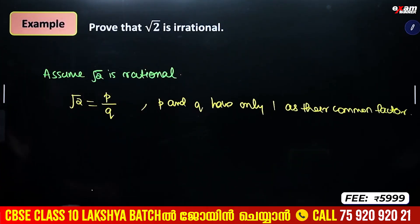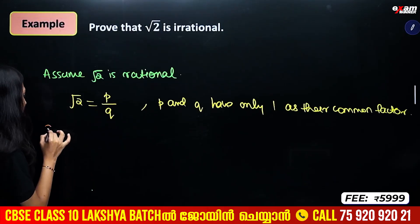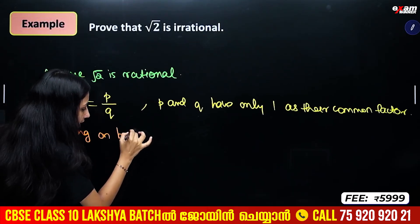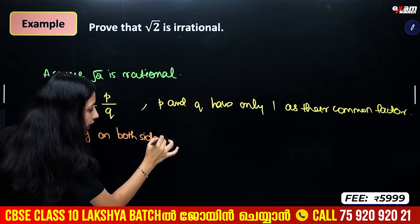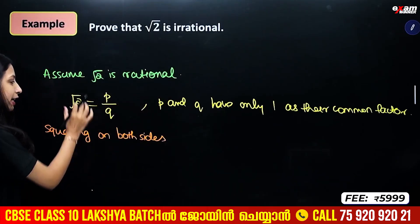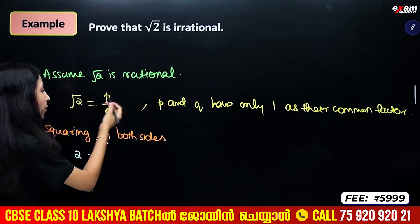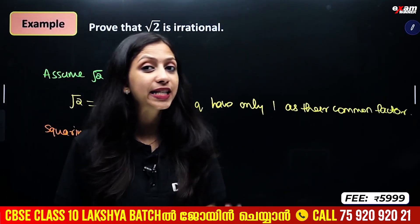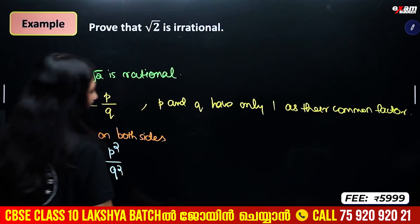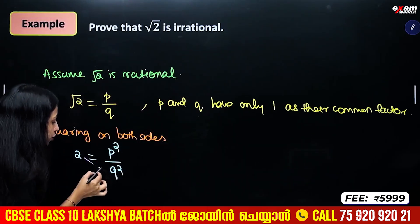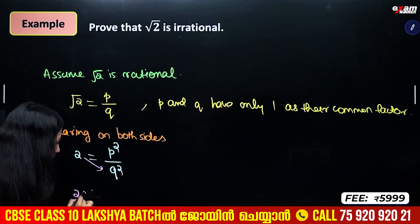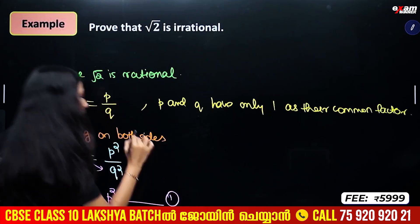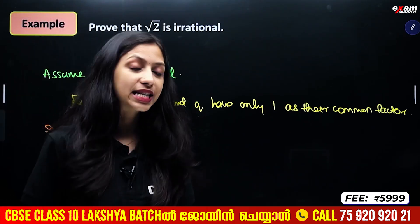Root 2 is equal to P by Q. Squaring on both sides, we get 2 equals P squared by Q squared. Therefore, 2 into Q squared is equal to P squared.